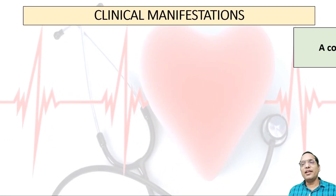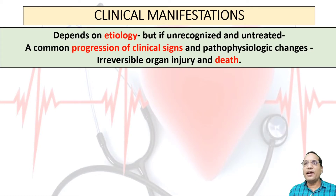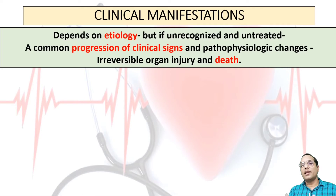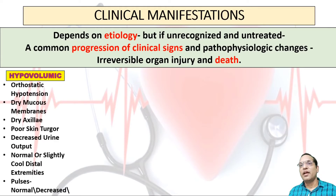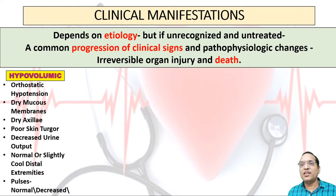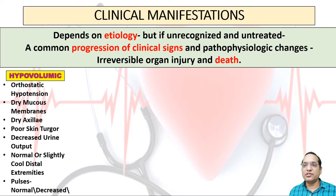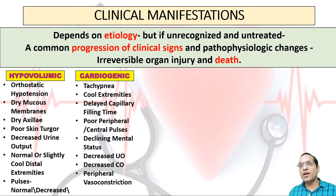Clinical manifestations depend on the etiology of shock. If etiology is unrecognized and untreated, a common progression of clinical signs and pathophysiological changes leads to irreversible organ injury and death. In hypovolemic shock, there is orthostatic hypotension, dry mucous membranes, dry axilla, poor skin turgor, decreased urine output, normal or slightly cool distal extremities, and pulses may be normal, decreased, or increased, with tachycardia.